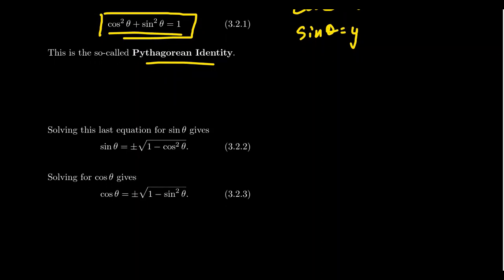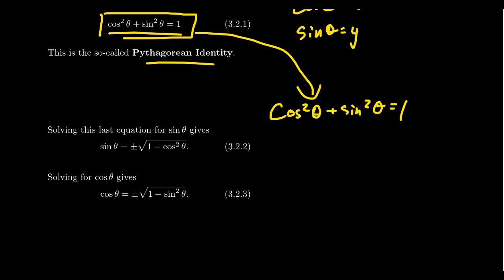For example, if you take the Pythagorean identity — the mom identity — and solve for sine, start with cosine squared plus sine squared equals 1. If we wanted to solve for sine, we would subtract cosine squared from both sides, giving us sine squared theta equals 1 minus cosine squared theta. This identity is also used very often to substitute — like in a calculus setting, if you have a sine squared you don't want, you can substitute it for 1 minus cosine squared. That substitution is valid because of the Pythagorean identity.